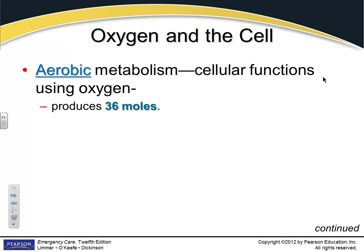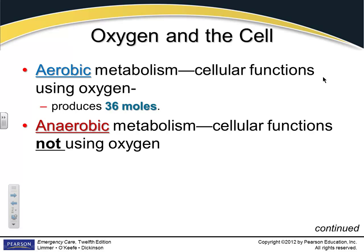With good oxygen, your cells are able to create up to 36 moles of energy — that's about what we want. Anaerobic is almost the opposite: cellular metabolism in the absence of oxygen. The body can do some metabolism without oxygen, but it's not a good state — it's not very efficient, and it only creates approximately 2 moles of energy. That's a huge difference.